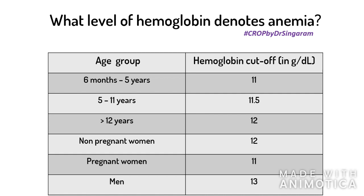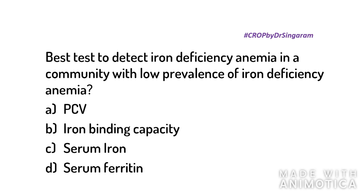Iron deficiency is the most common micronutrient deficiency associated with anemia — that itself is an MCQ. The question is: what is the best test to detect iron deficiency in a community? Among options like TIBC, iron binding capacity, serum iron, and serum ferritin, the answer is serum ferritin. Serum ferritin is the storage form of iron, and its levels decrease whenever there is iron deficiency.